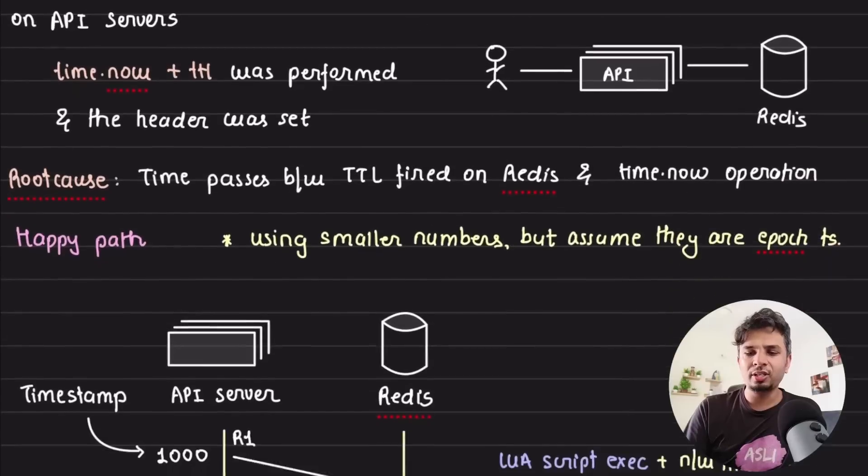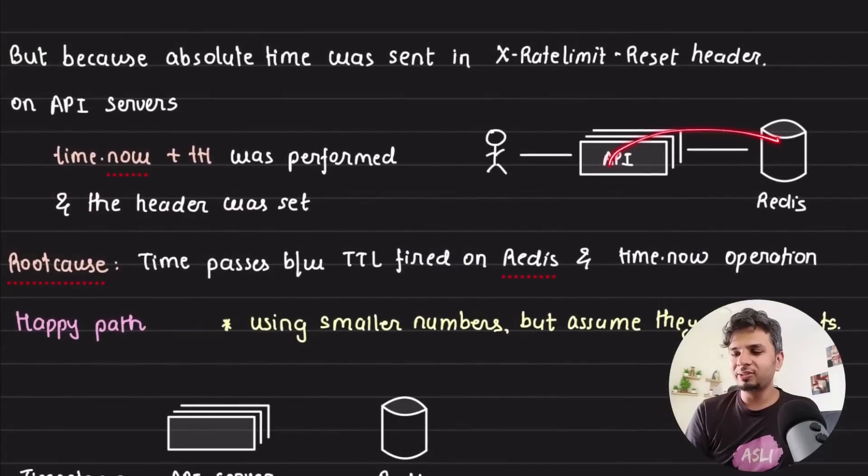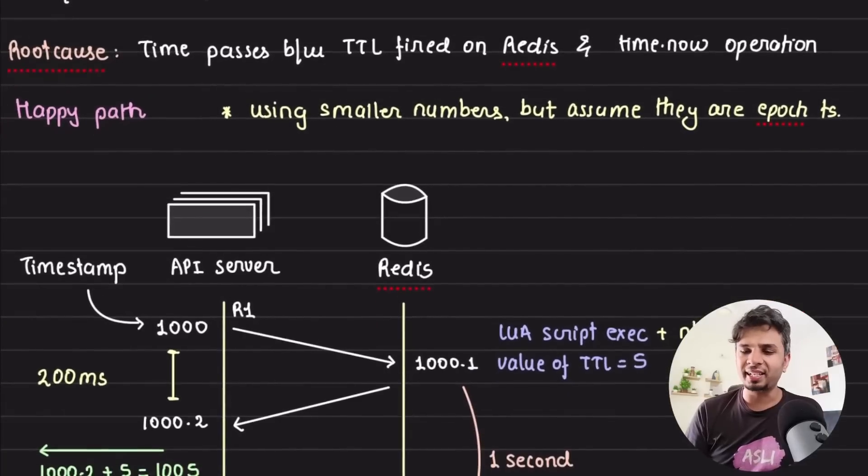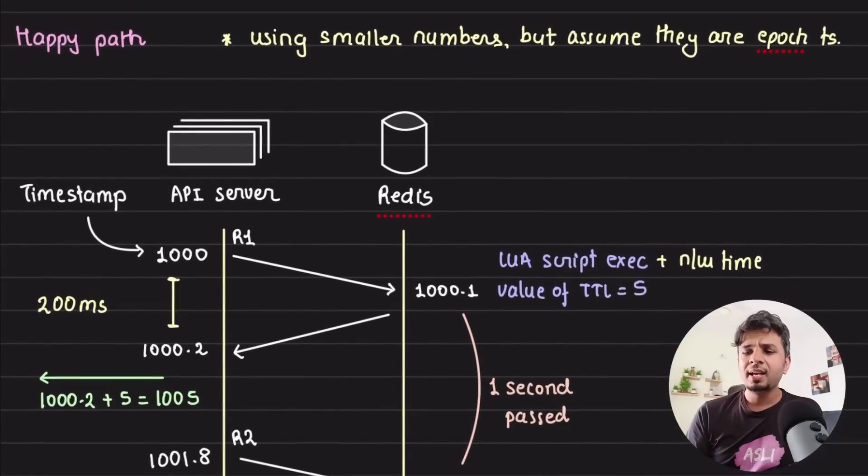This is where the problem starts to creep in. So the root cause is that time actually passes between when you made a call to Redis and when you are computing it over here. Let's understand with the happy path, and then you'll easily understand the edge case. It's pretty fascinating. Now here, a small and quick disclaimer: I'm using smaller numbers like 1000 to help you understand, but in reality these are all epoch timestamps in seconds. But I'm just using smaller numbers because it makes it easier for me to explain.